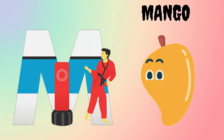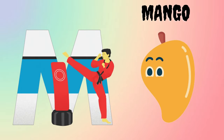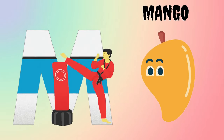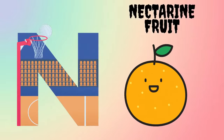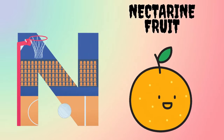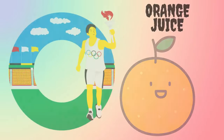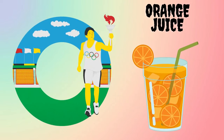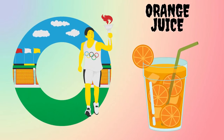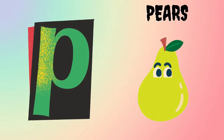M is for Mango. N is for Nectarine Fruit. O is for Oranges.